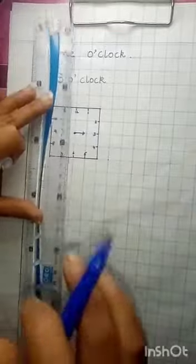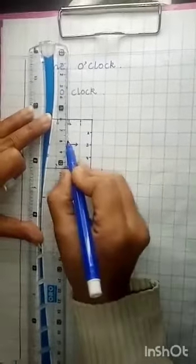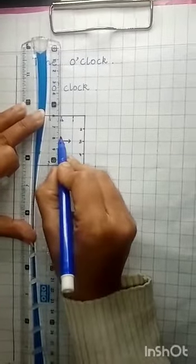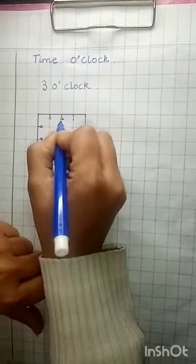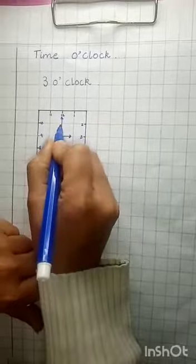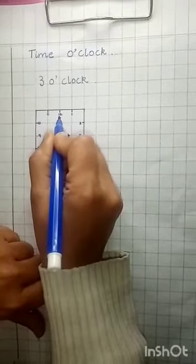Now we will make the minute hand, and it stays at number 12. So we will make an arrow over here. And this minute hand goes out of the block.